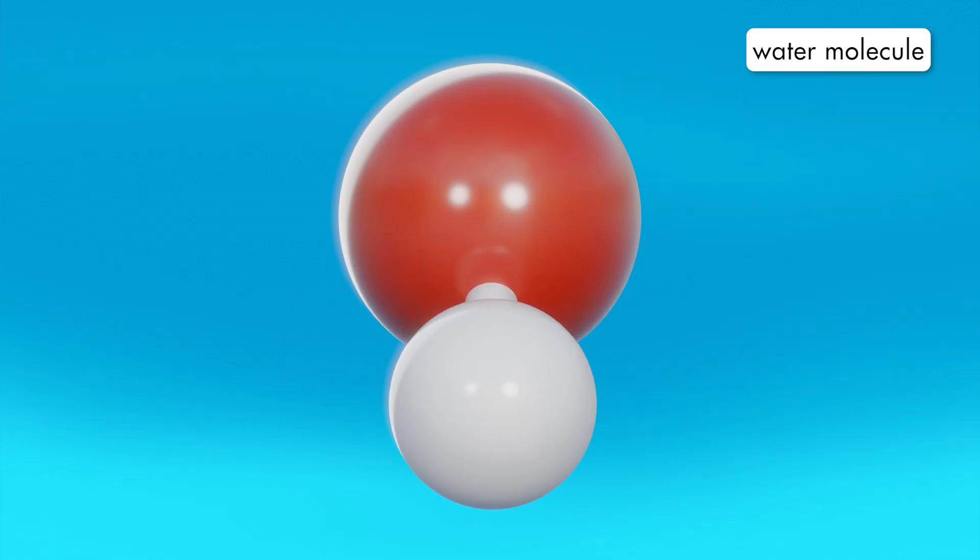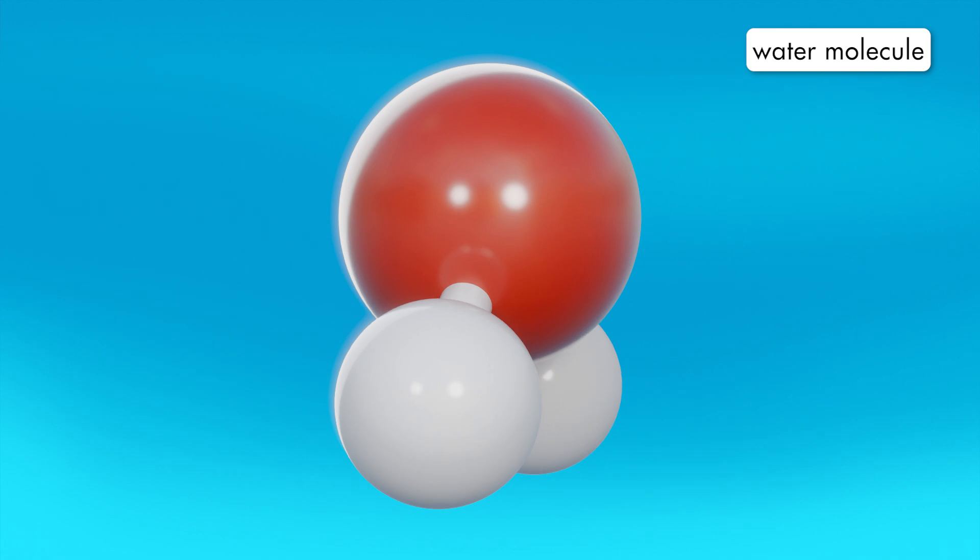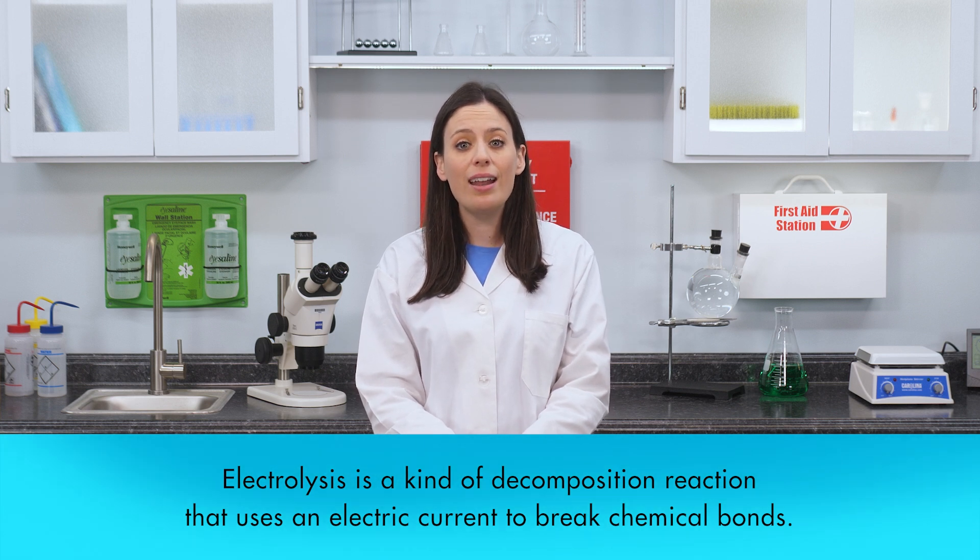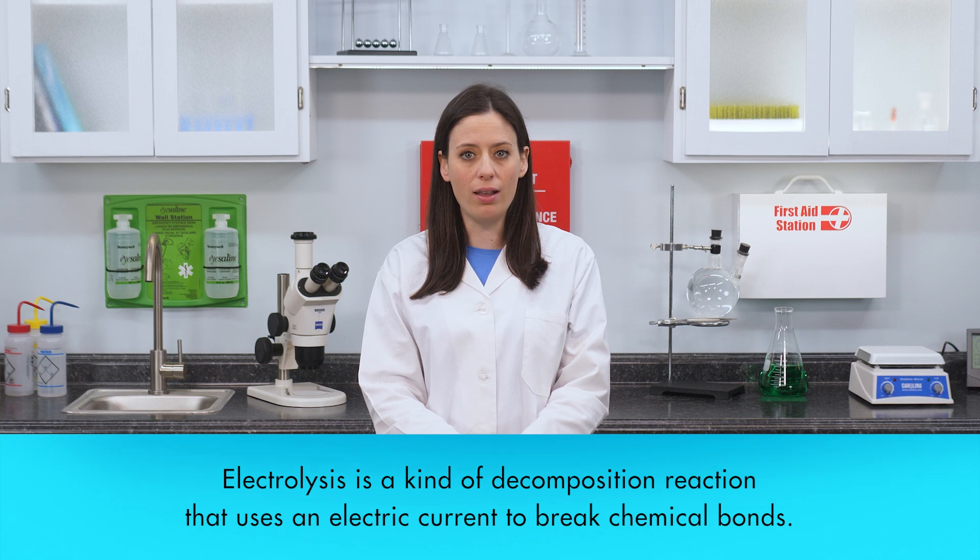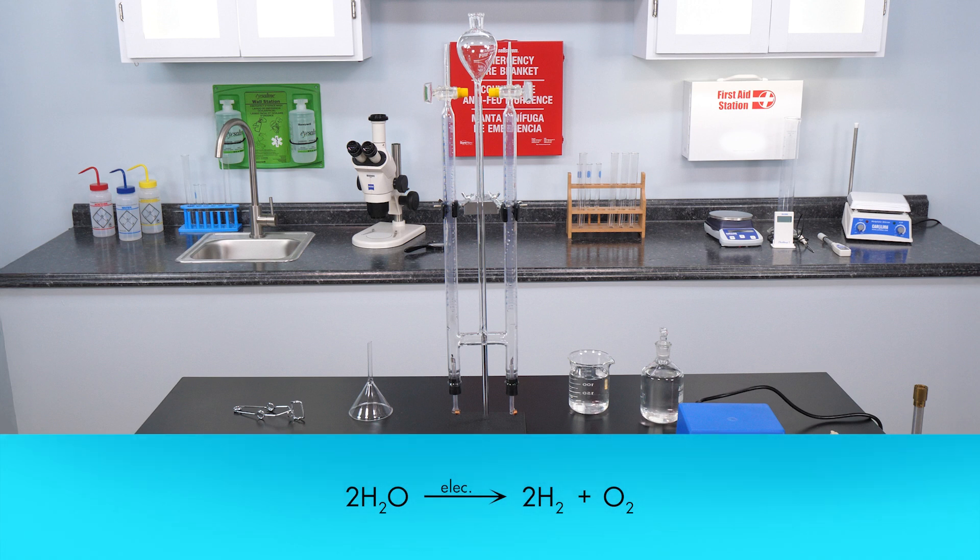Sometimes, an electric current is needed for a decomposition reaction to take place. Water molecules can be decomposed into hydrogen and oxygen by the process of electrolytic decomposition, or electrolysis. Electrolysis is a kind of decomposition reaction that uses an electric current to break chemical bonds. In an earlier lab, we used electrolysis to decompose water into hydrogen and oxygen. The electrolysis of water was accomplished using this Hoffman apparatus. The chemical equation for the electrolysis of water is 2H2O yields 2H2 plus O2.